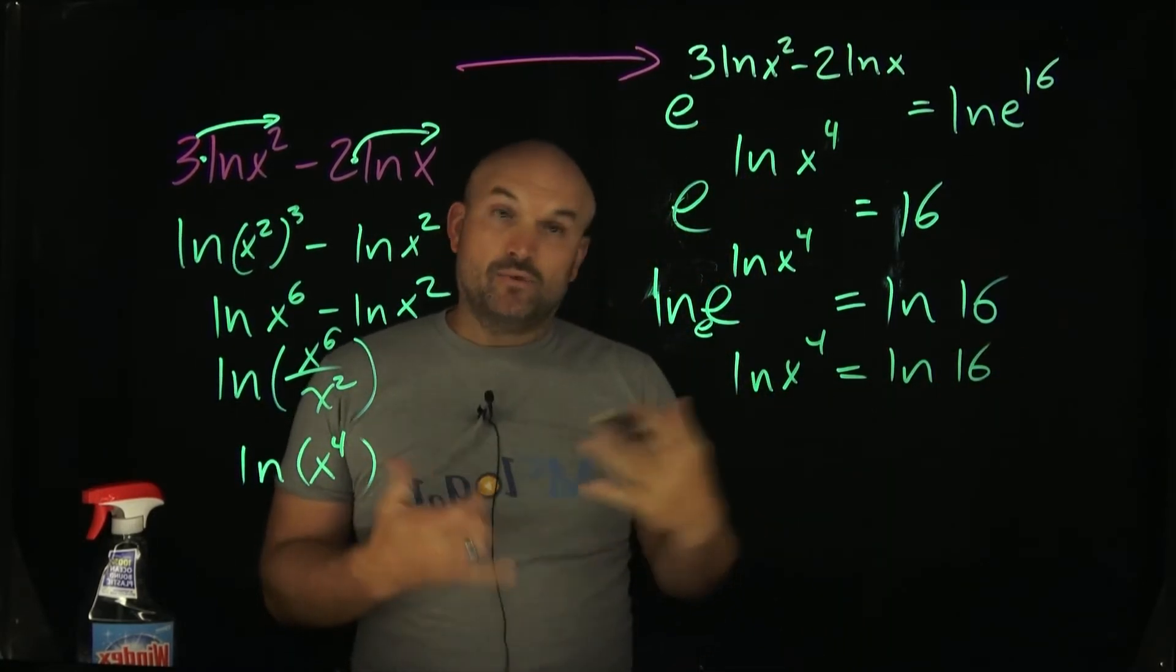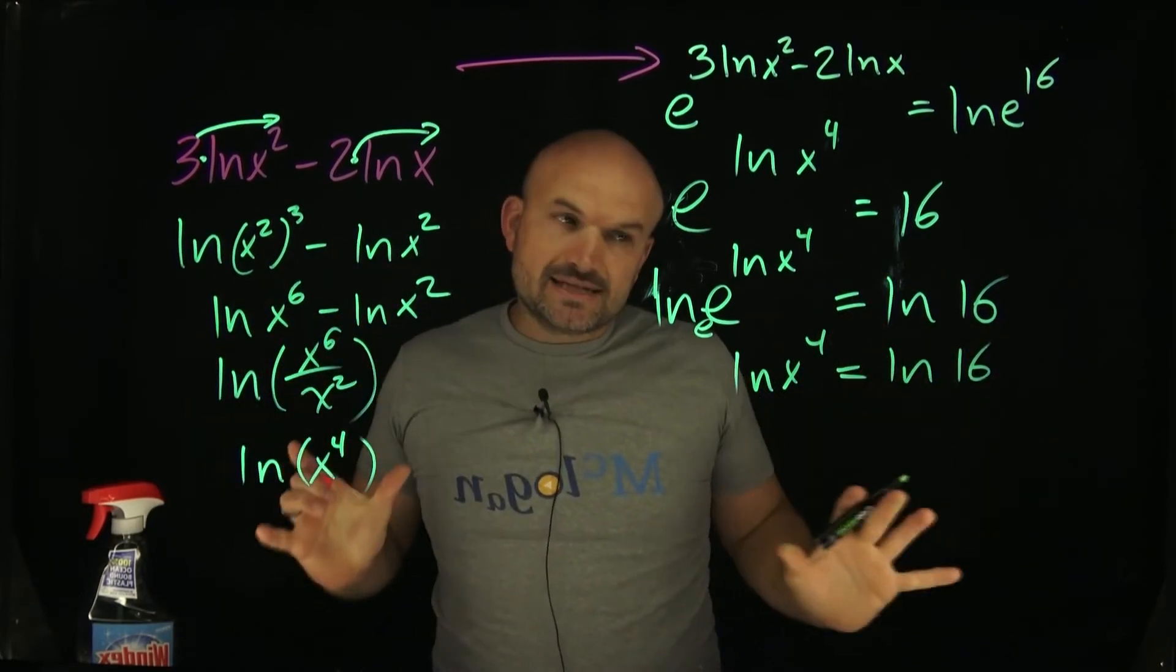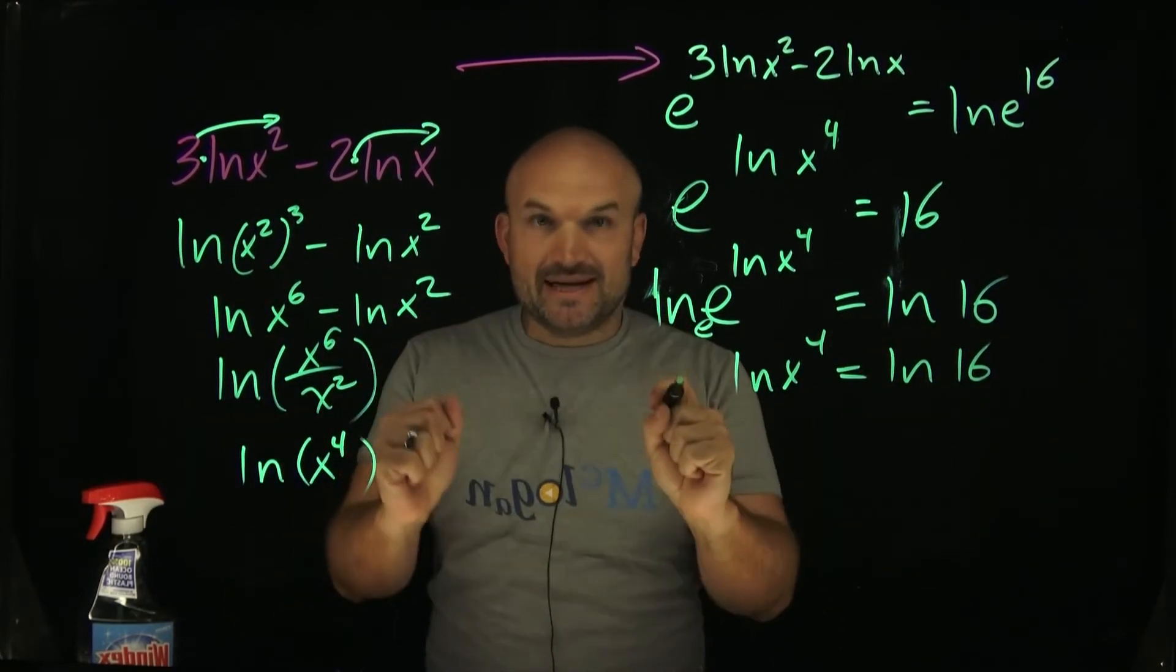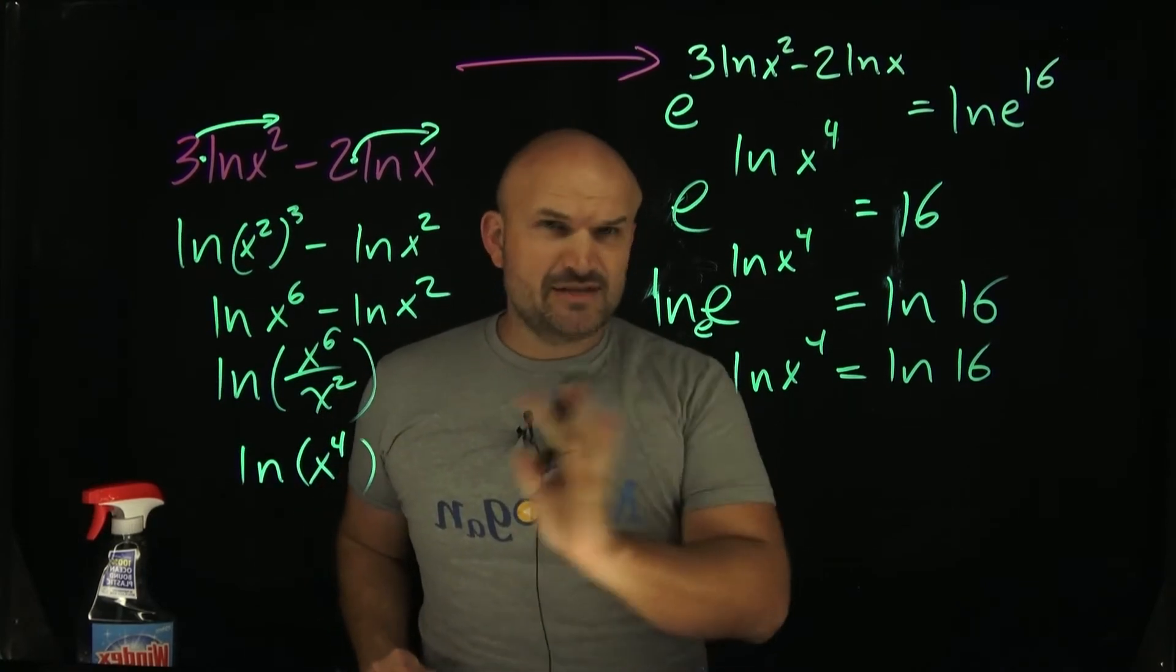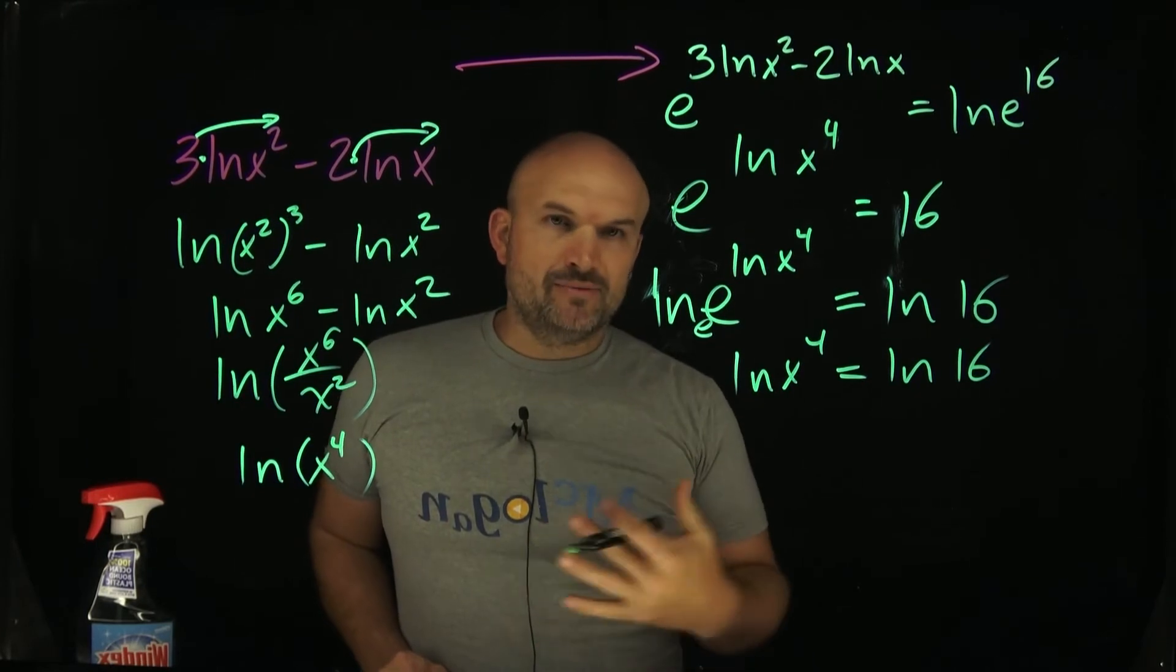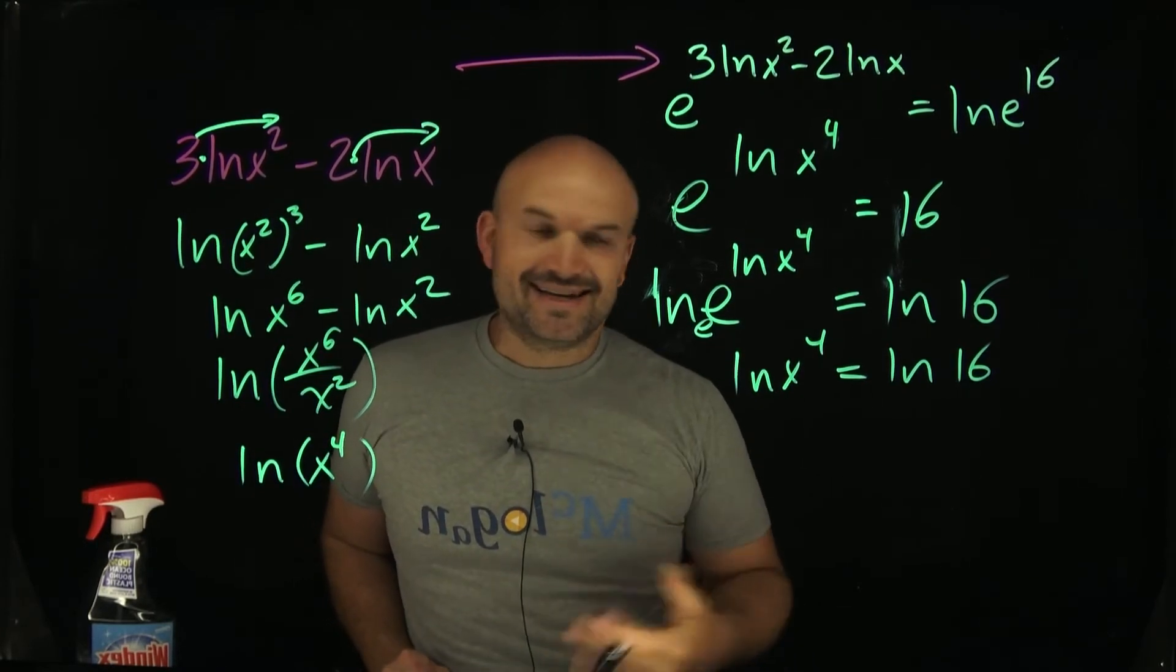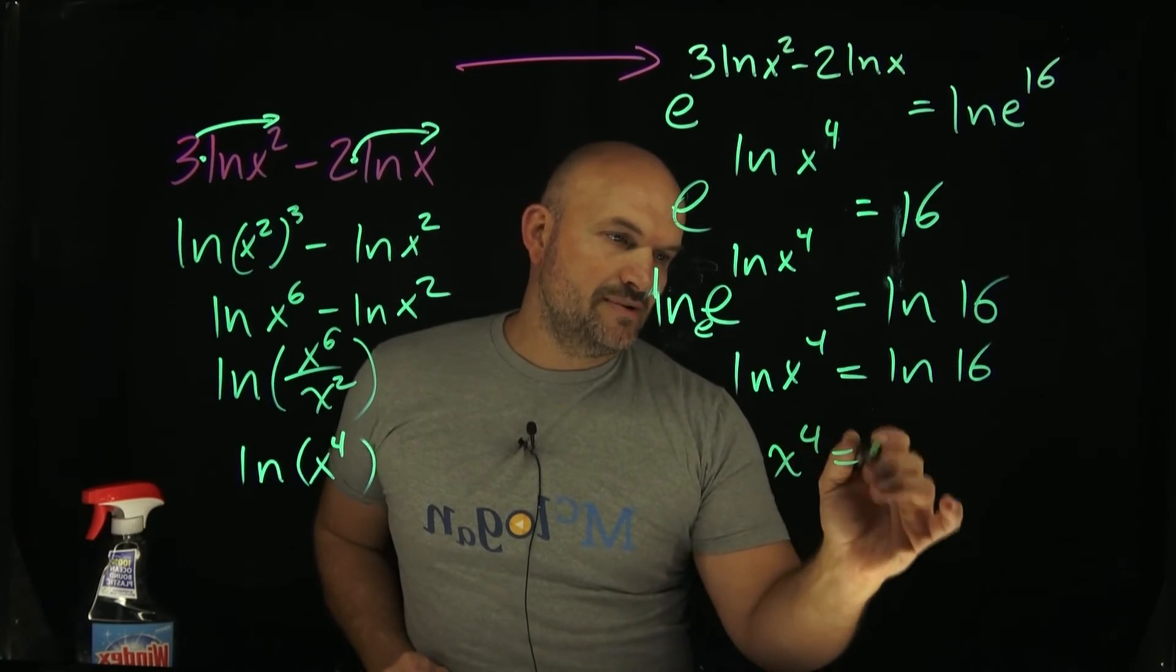So now what we can do is apply the one-to-one property. Whenever you have a logarithm equal to a logarithm, both are isolated logarithms with the same base. They have to be isolated and they have to have the same base. Remember that. Because that's a really common mistake students will make, is you apply the one-to-one property when the logarithms are not isolated or the bases are different. But now I can just say x to the fourth is equal to 16.